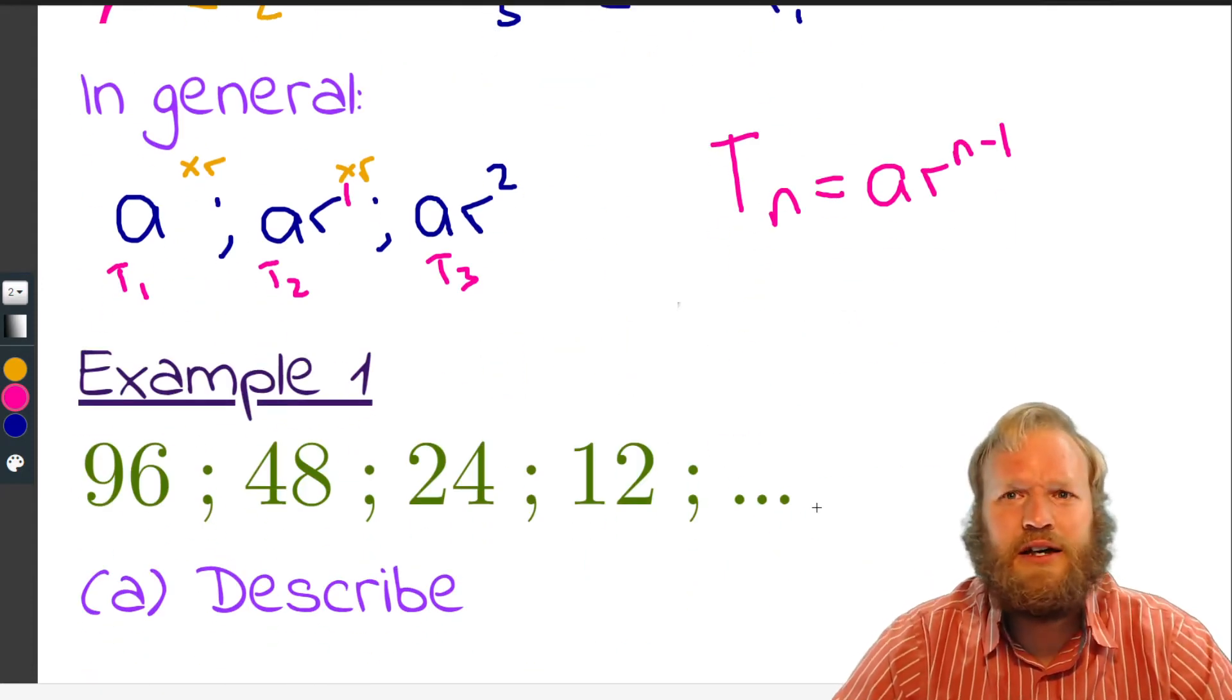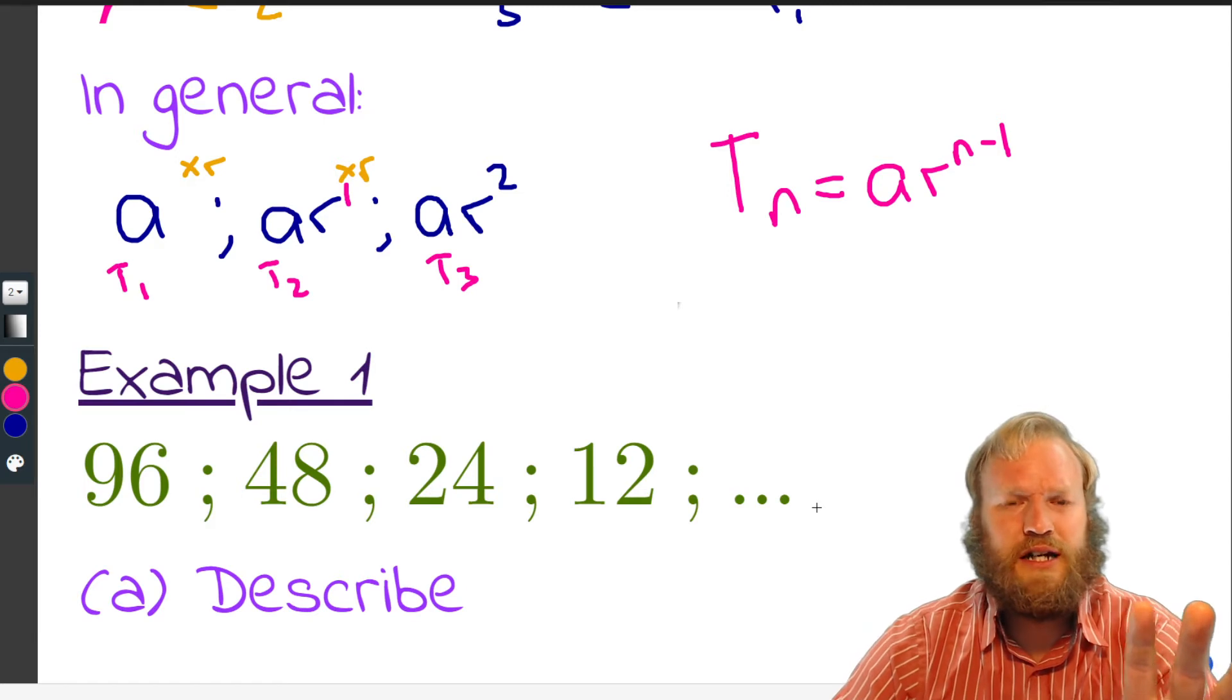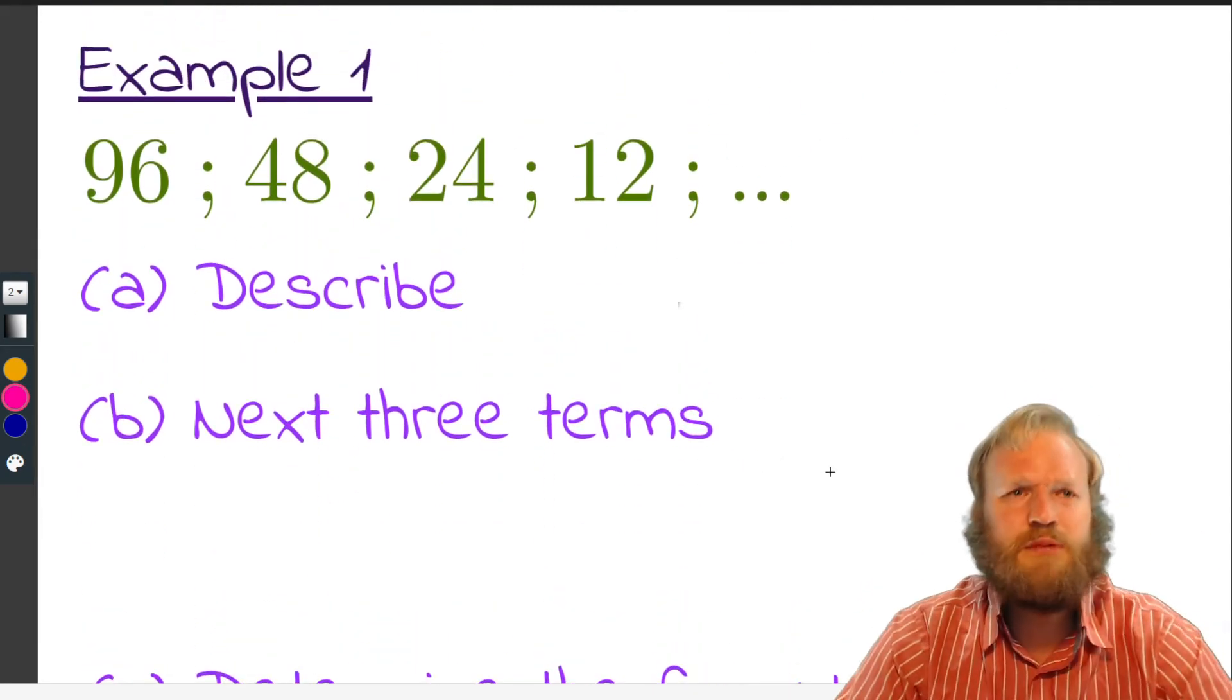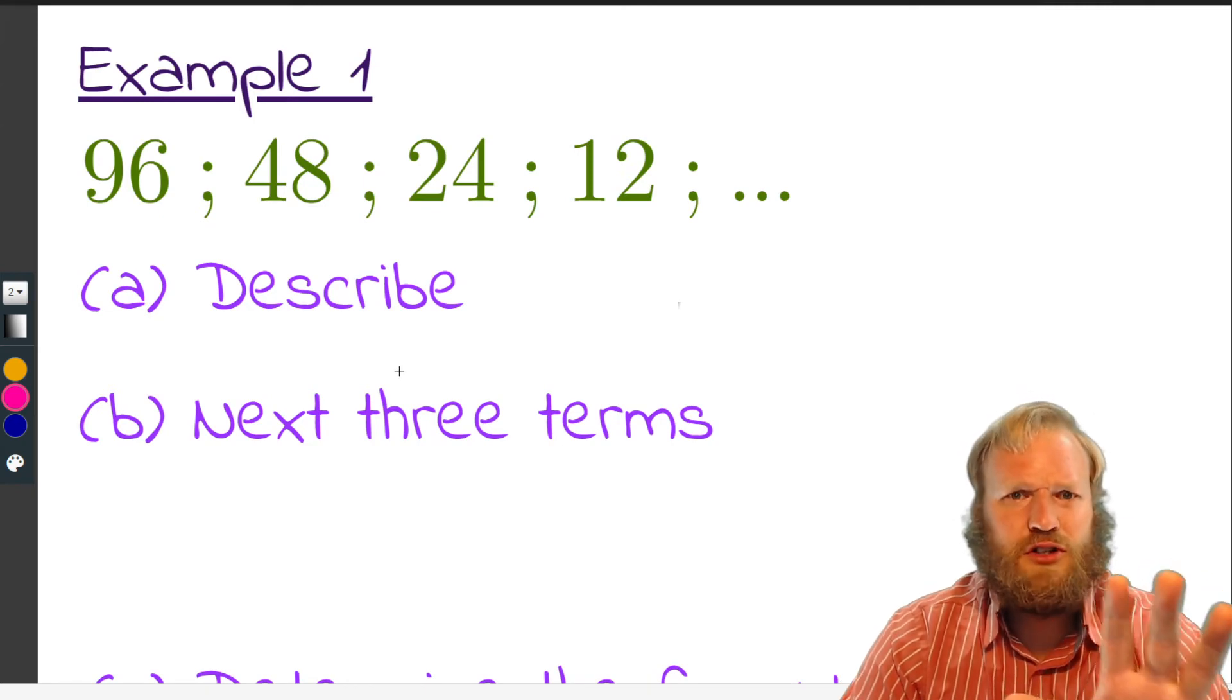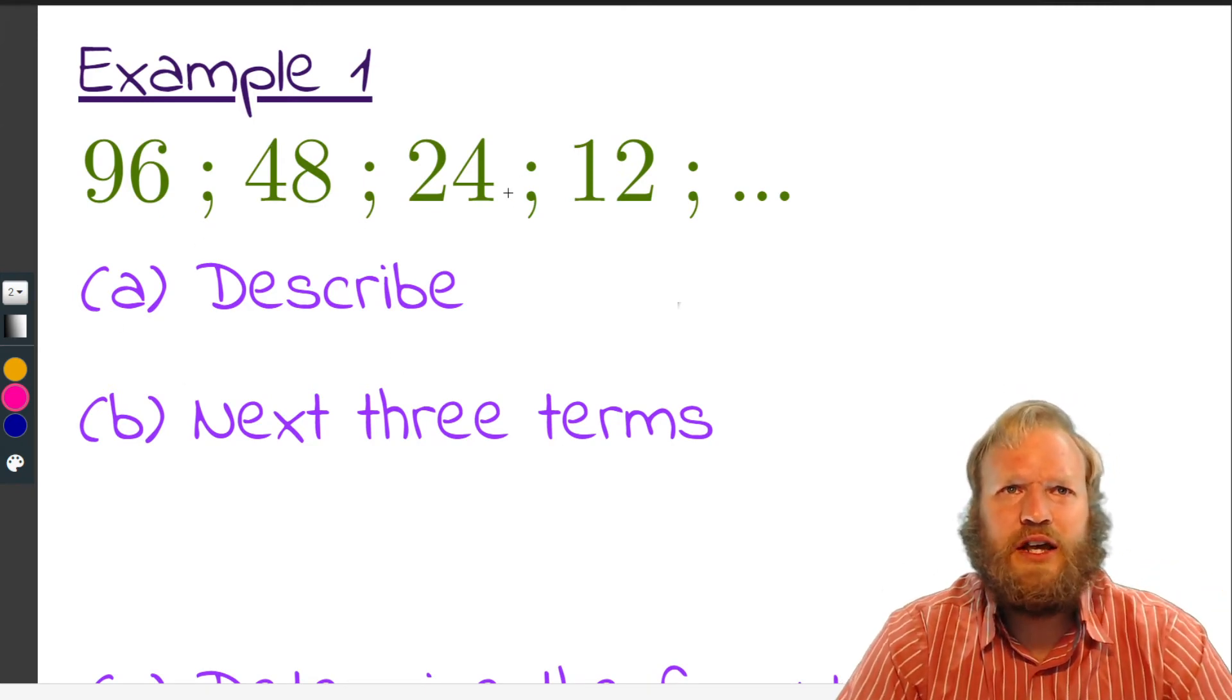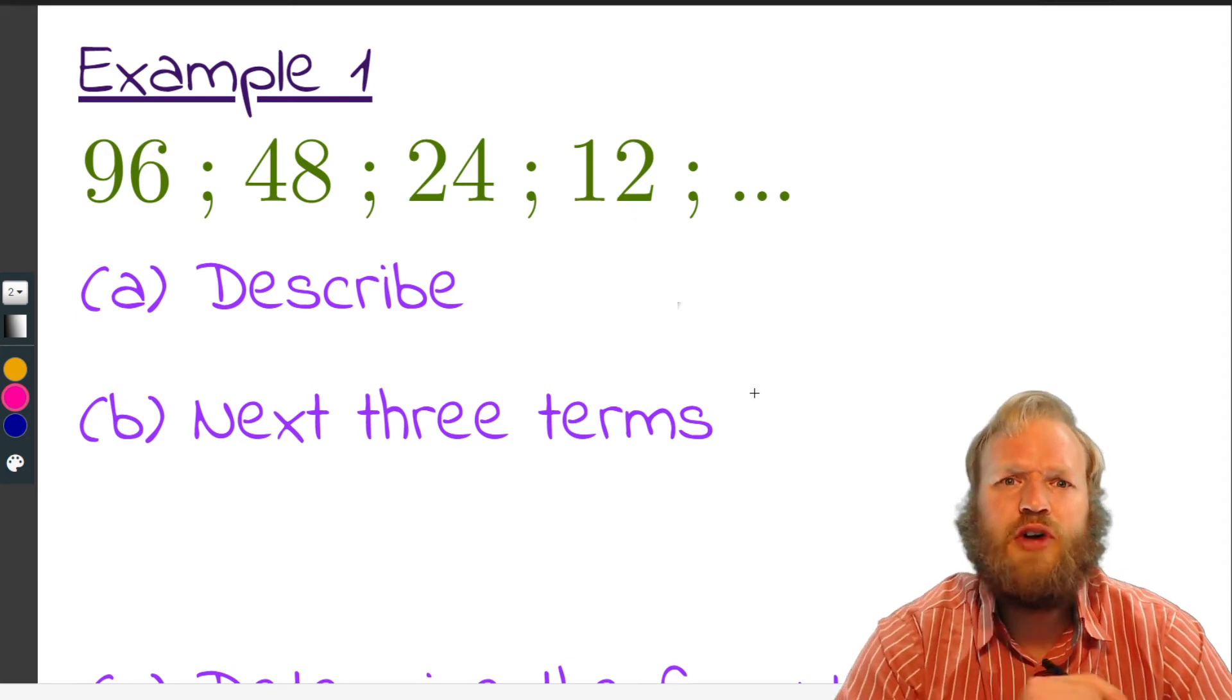So let's go through, I think, there are two examples like this and then two more complicated examples. I'm going to try and speed along here. But of course, you've got pause. So, example 1: 96, 48, 24, 12. Describe the sequence.